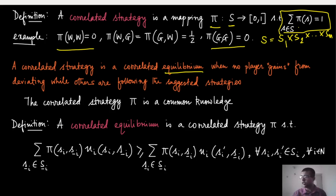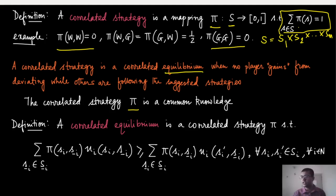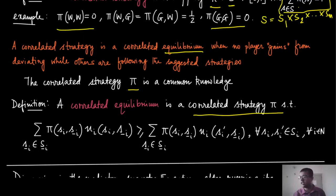Whenever the mediator and its correlated strategy pi are decided, that becomes common knowledge. So everybody knows, for example, that the traffic police will toss a coin: half the time it asks player one to go and half the time it asks player two to go. We call a correlated strategy pi a correlated equilibrium if the following condition holds.